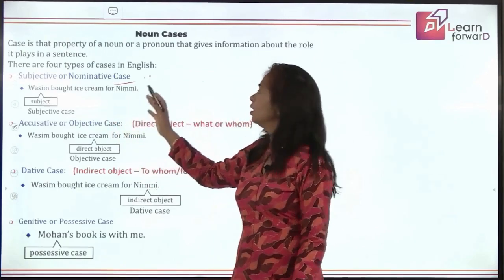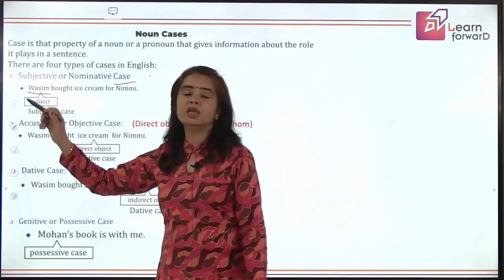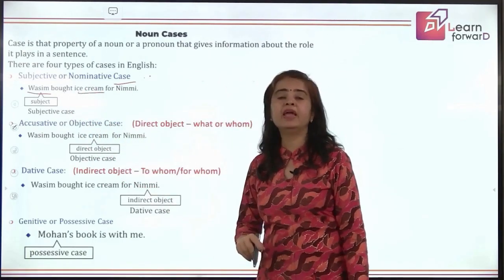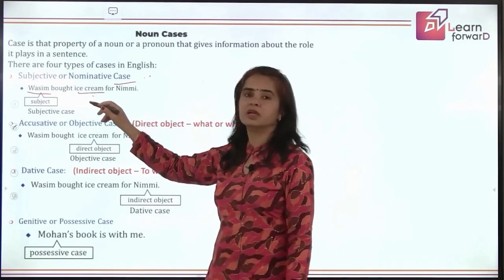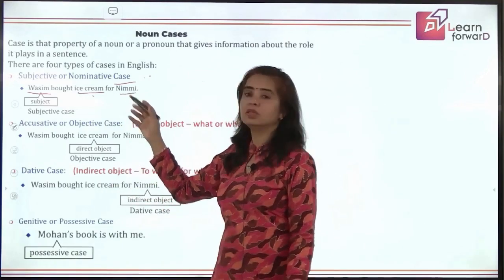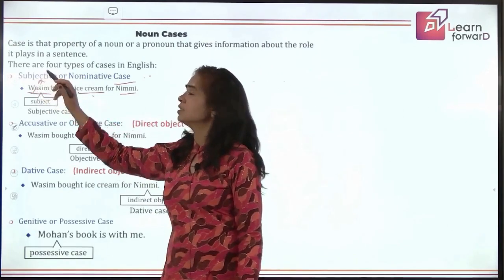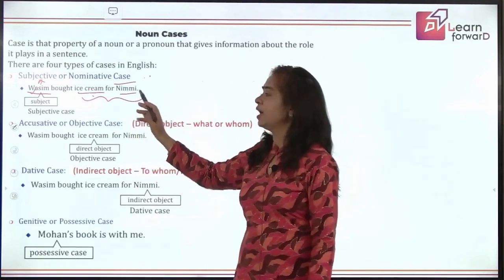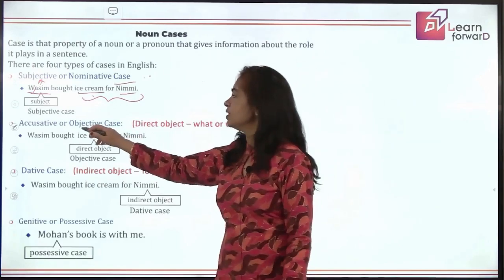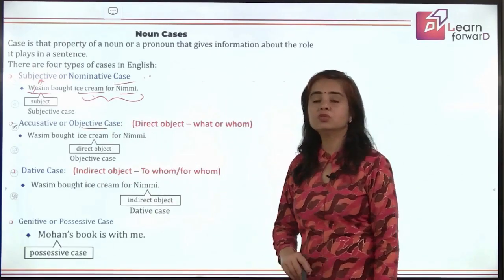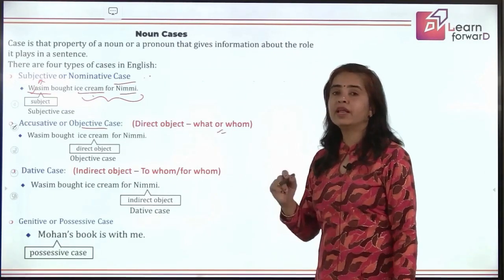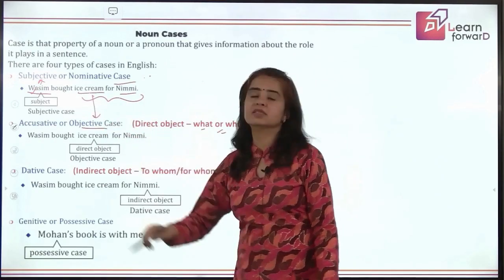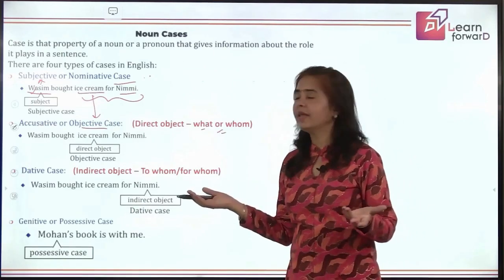For example: 'Wasim bought ice cream for Nimmi.' Wasim is doing the action of buying — he is the subject, so 'Wasim' is in the subjective or nominative case. 'Ice cream' is what he bought — the object. This is the direct object, giving an answer to 'what'. What did he buy? He bought ice cream. So 'ice cream' is in the accusative or objective case, which is used for direct objects.